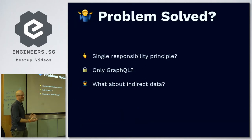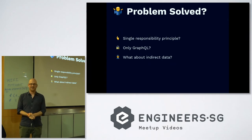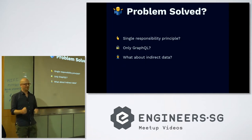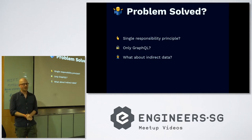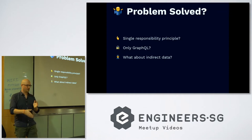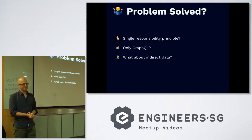So problem solved, right? We don't have the N+1 problem and we efficiently query data. But in my opinion, I wasn't really happy with this. The most important reason was the single responsibility principle. What happens is you do the data loading in your resolver, but the resolver should basically just be responsible to call out to the context. The creators at Facebook said: keep your GraphQL layer as thin as possible, and do all your business logic in a different module.